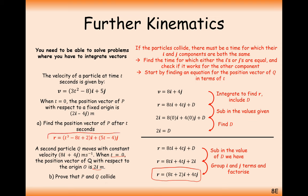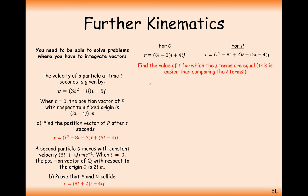For the two particles to intersect, their i components must be equal to each other and their j components must be equal to each other. The i component for P contains a t cubed term, making it very difficult to solve directly. So we use the j components instead: set 4t equal to 5t minus 4, then verify the i component gives the same result.